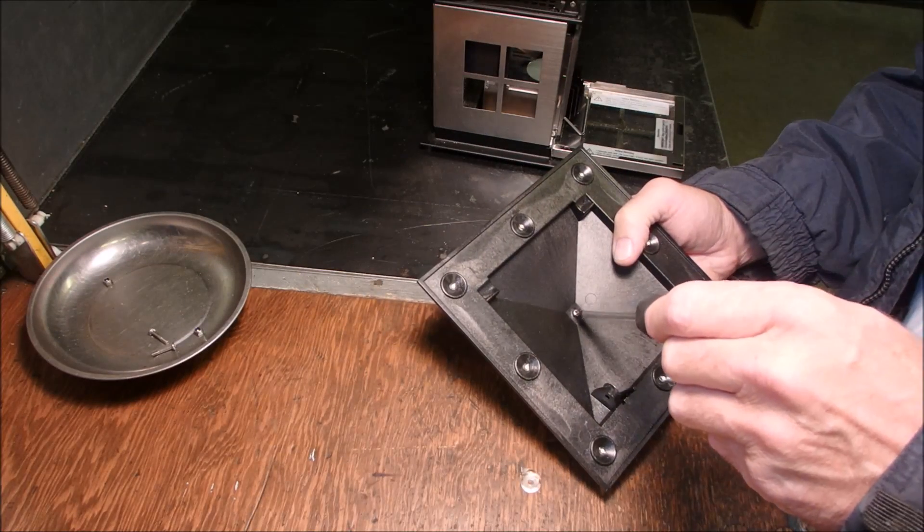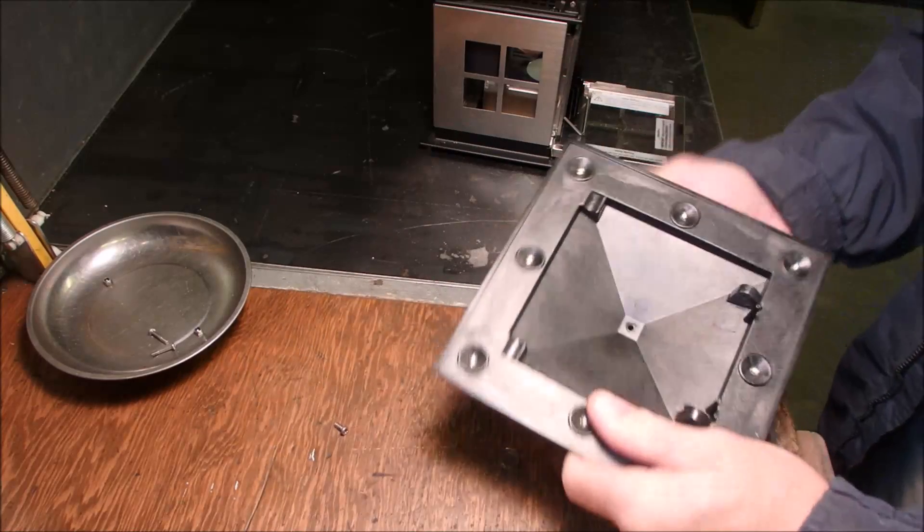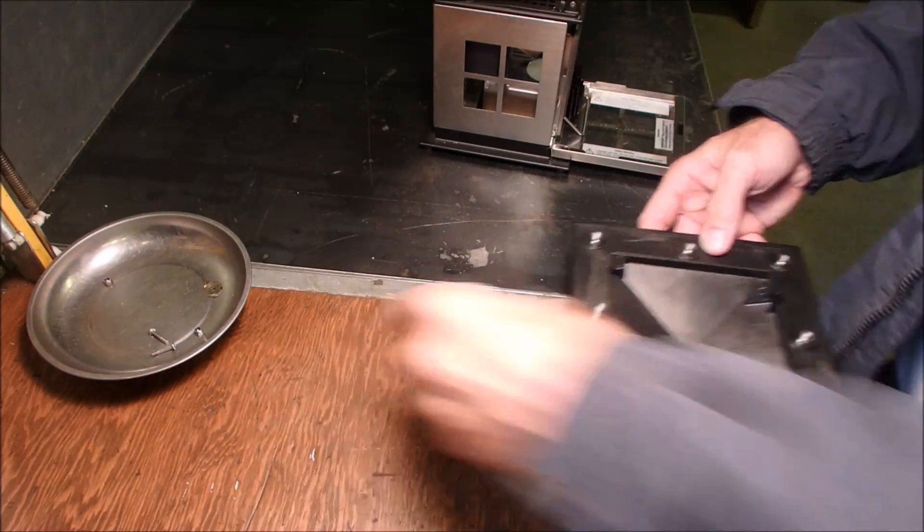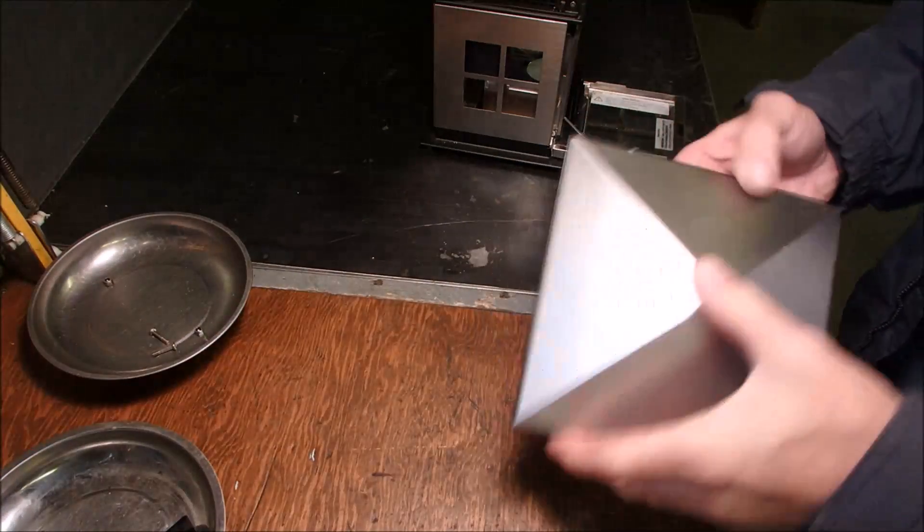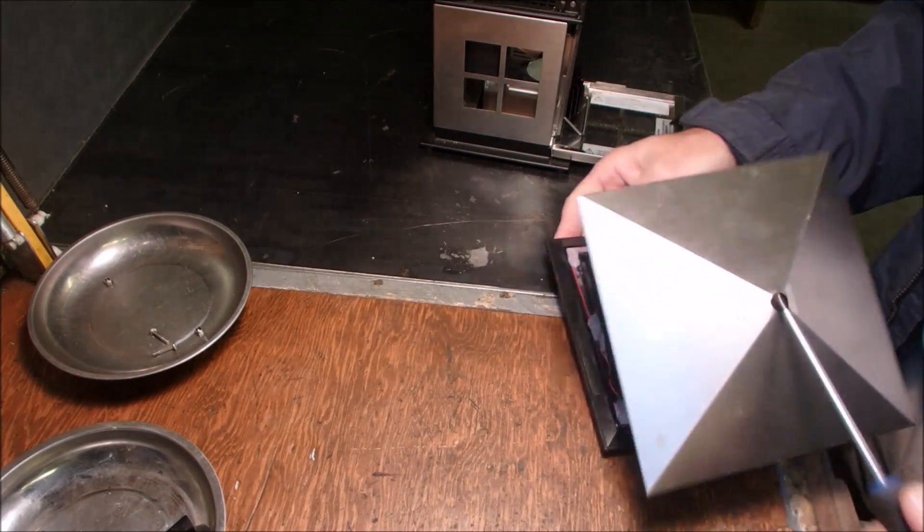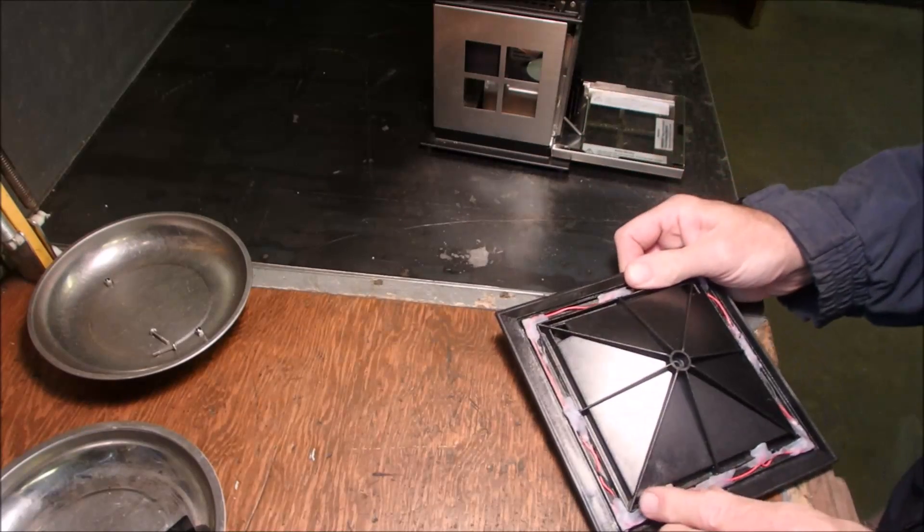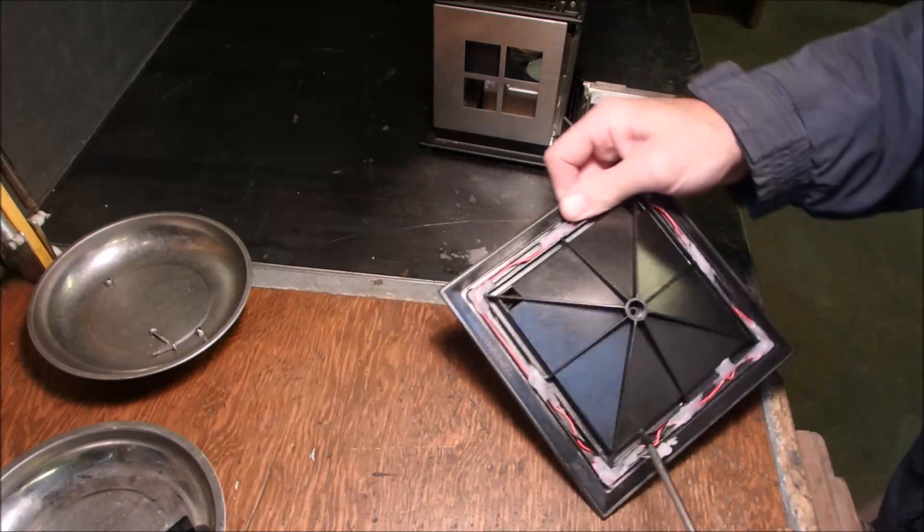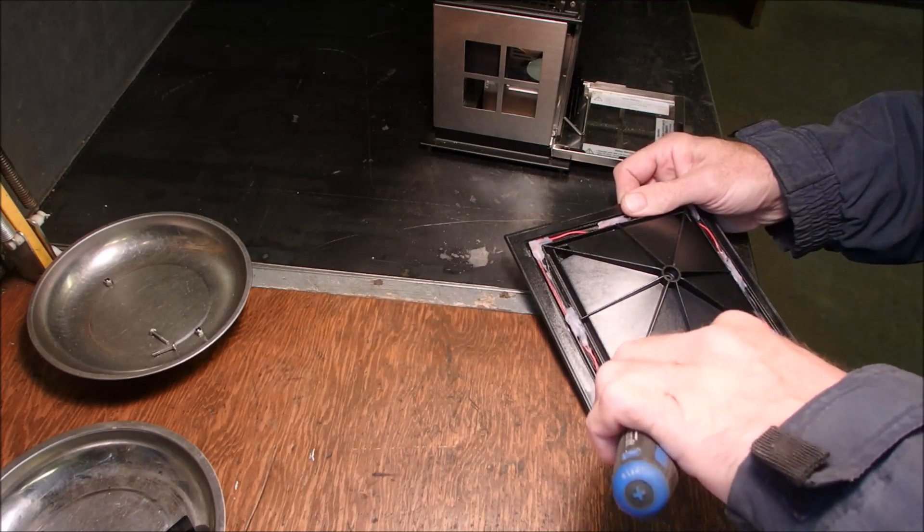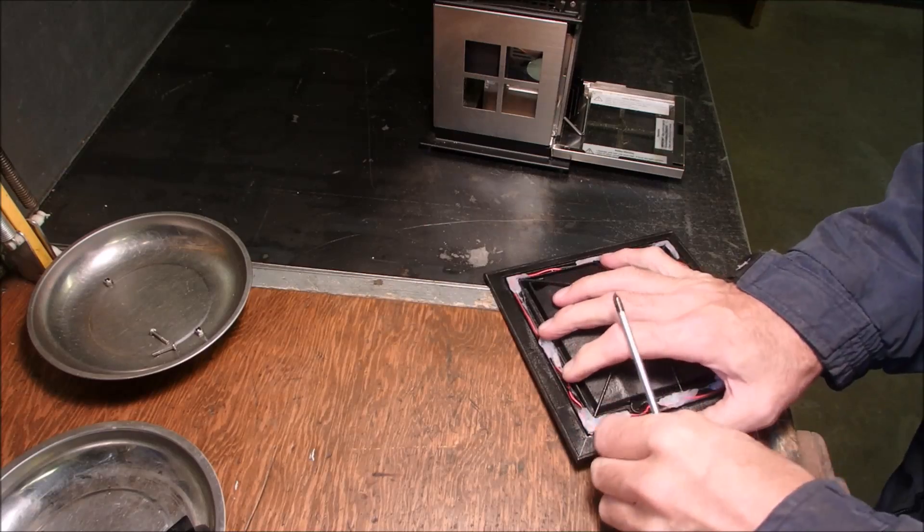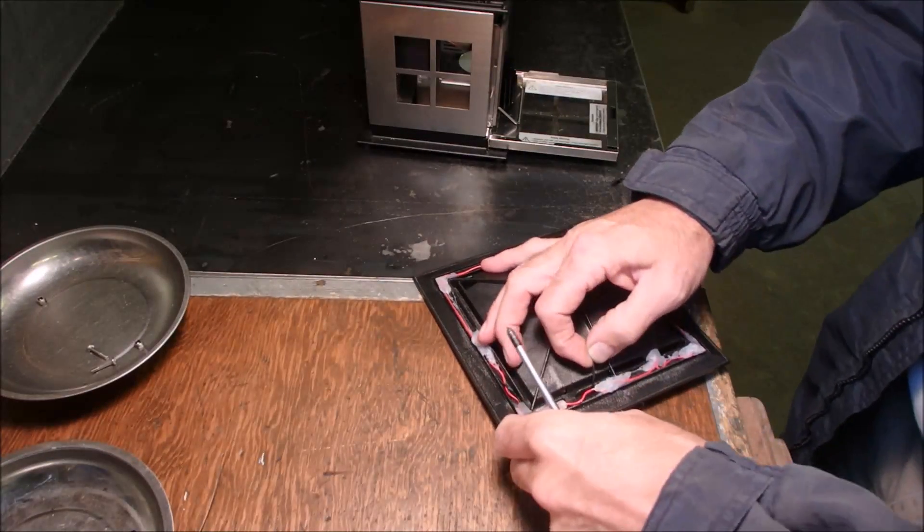So let's take this apart. I'll even use 2 different trays for junk. Right there. Look at that! The ground wire's broken.